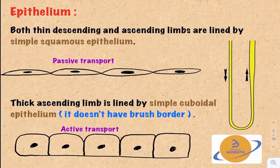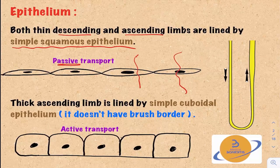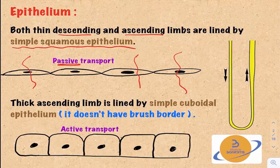The epithelium lining of the Loop of Henle is divided into two types. The thin descending and ascending limbs are lined by simple squamous epithelium — very small cells responsible only for passive transport, as nutrients pass through without requiring energy.